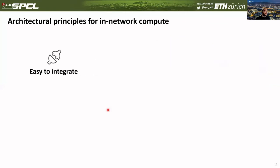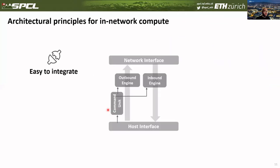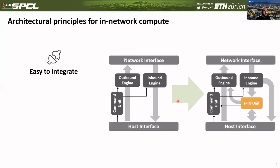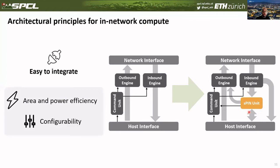The last class of requirements is about ease of integration. What we are essentially proposing is to move from a model where data comes from the network interface, is handled by the inbound engine, and then written to host memory, to a model that now has a processing unit directly on the NIC — sitting between the inbound engine and the host interface. This integration has to be feasible, and to facilitate that, this accelerator should be small in area and power-efficient, plus configurable so it can be integrated in different scenarios — for example, handling heavier or lighter workloads with more or fewer HPU cores, or sustaining different network bandwidths.